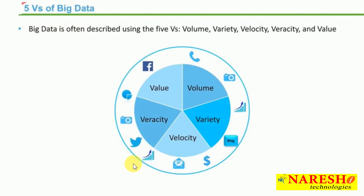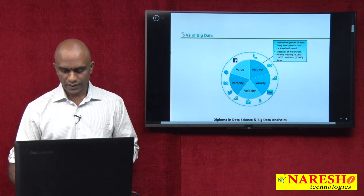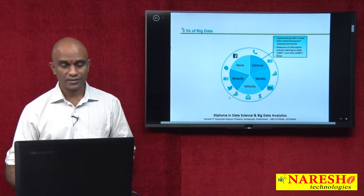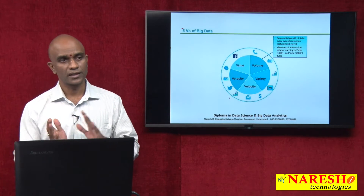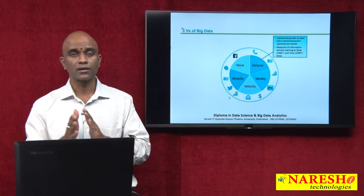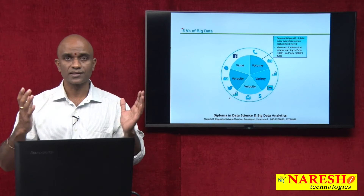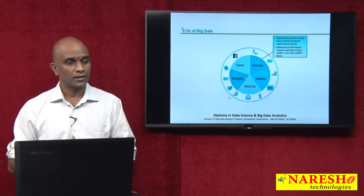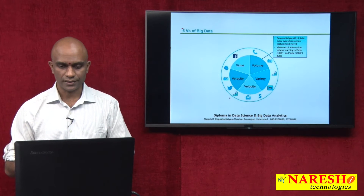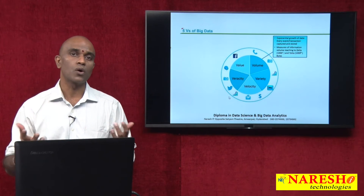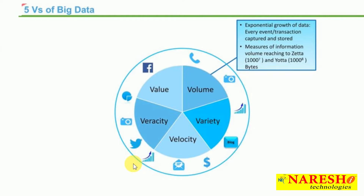Here are the five Vs of Big Data: volume, velocity, variety, veracity, and value. Digging a little deeper — volume is the exponential growth of data. The data could be in databases, other sources like the internet, log files, text documents, or transaction events. Today we are going beyond gigabytes, entering the world of terabytes, petabytes, and exabytes.